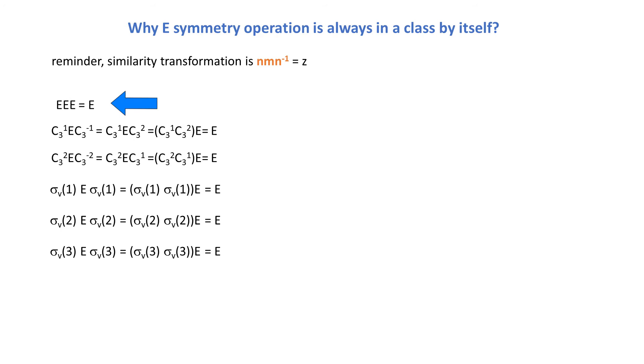So first row is trivial. In a second row you might first change C3-1 to C3-2, then we take advantage of the fact that E commutes with any element. Please recall that this is one of the axioms, so we swap E and C3-2, and then we take advantage of the other property, that is associativity, and we put some brackets, and notice that C3-2 and C3-1 gives E.